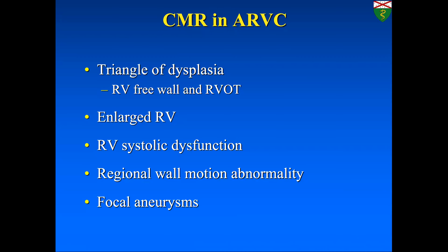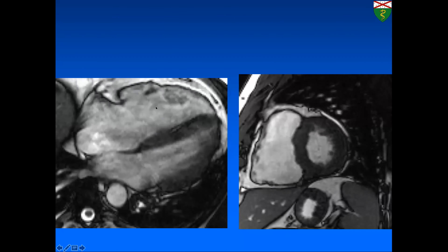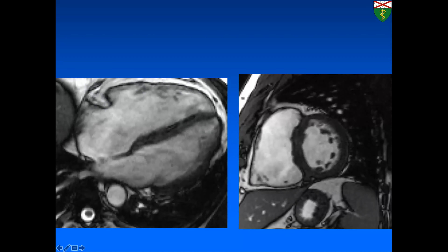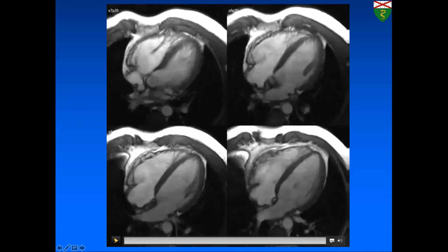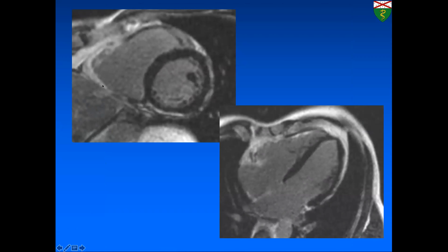Pay particular attention to the triangle of dysplasia — the RV free wall through the RVOT. An RVOT view will be helpful. On imaging, you will see an enlarged ventricle with poor contractility, systolic dysfunction, regional wall motion abnormality, and potentially focal aneurysms. In one patient with ARVC, the right ventricle is dilated with low contractility and focal dyskinesis on the lateral free wall. Another patient shows the classic accordion sign — a corrugated, akinetic appearance of the ventricle. Delayed enhancement involving the right ventricle can be seen in ARVC but is not part of the task force criteria. Fat infiltration, which used to be a criterion for ARVC, is no longer one.